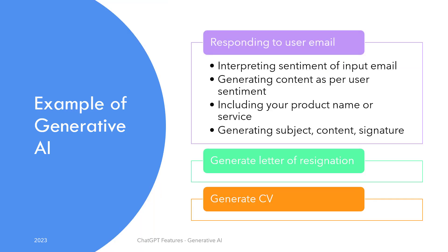This concept is best explained by an example. Say you have received a customer email or comment regarding your service. You want to respond to your customer with an automated email generated by ChatGPT. How would you go about doing that?